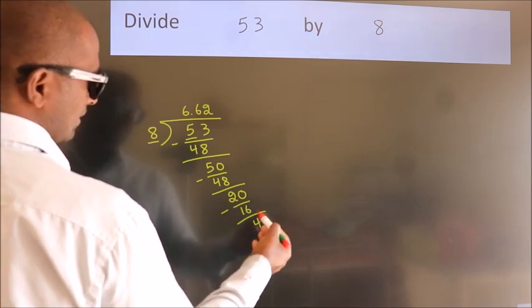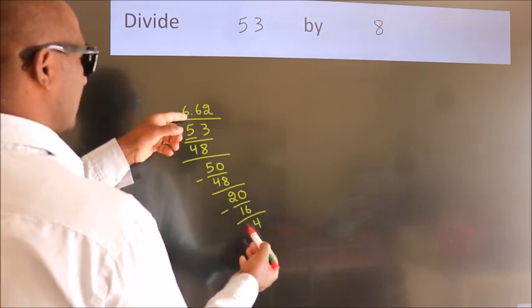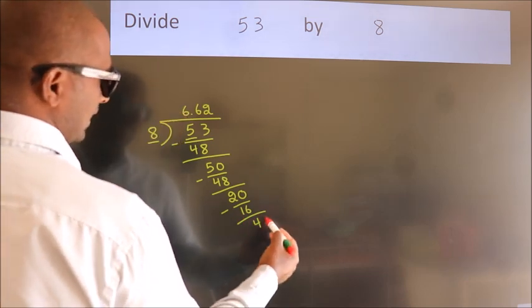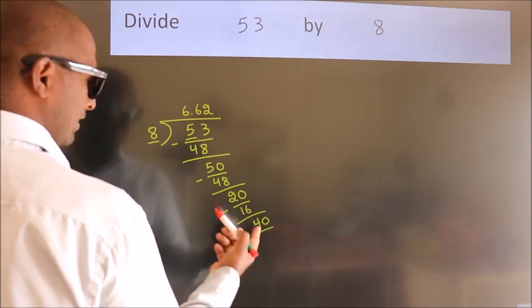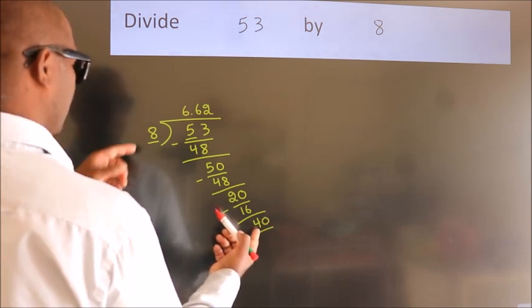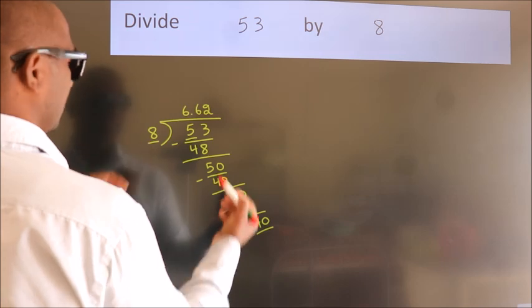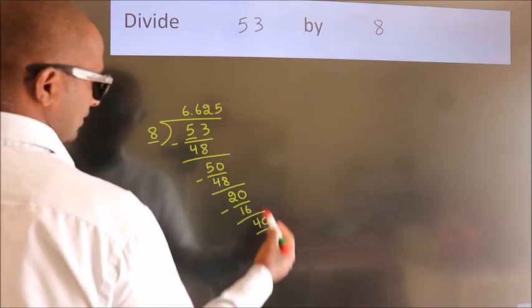After this, we already have the decimal. So directly take 0. So 40. When do we get 40? In 8 table, 8 times 5, 40.